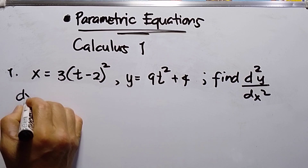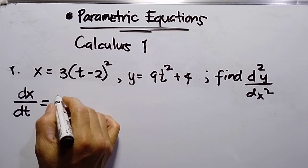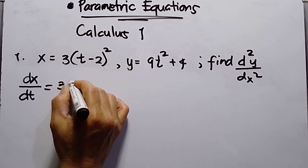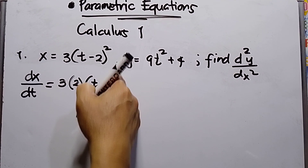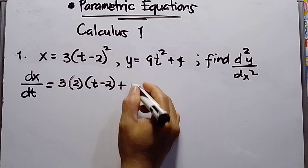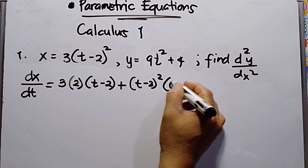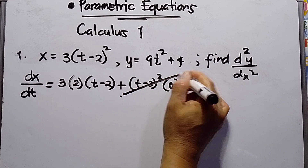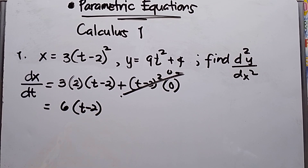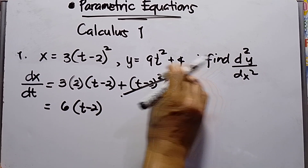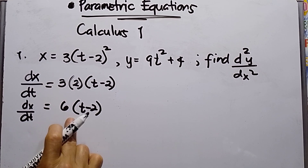First, I need to differentiate the first function to get dx over dt. This is product rule: copy the first and differentiate the second, giving 2(t minus 2) to the power of 1, plus copy the second (t minus 2) squared times the derivative of 3, which is 0. So multiplying 3 times 2 gives 6, and the answer is dx over dt equals 6(t minus 2).